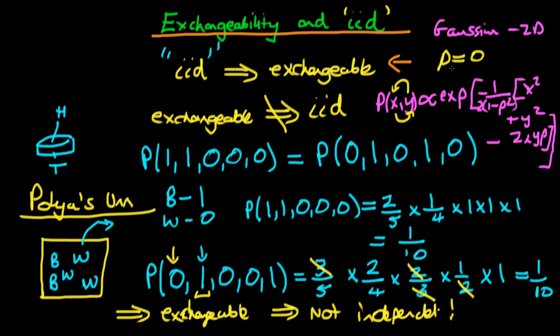It's only when rho is equal to 0 is there no correlation between X and Y. So again, we've got an example of a data process, which is in theory exchangeable, but not necessarily independent.